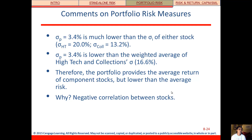What you should notice is that our portfolio standard deviation is lower than the standard deviation of either high-tech or collections by themselves. The reason is that when high-tech is doing well, collections is doing poorly, and more importantly, when high-tech is doing poorly, collections is doing well. So they kind of balance out and eliminate some of those really bad returns in both cases. Our standard deviation of the portfolio is even lower than the weighted average of our two individual securities.